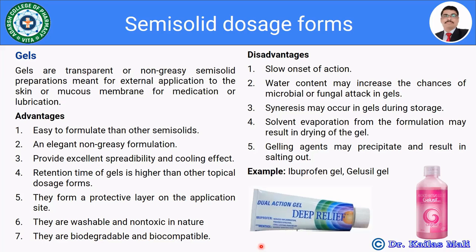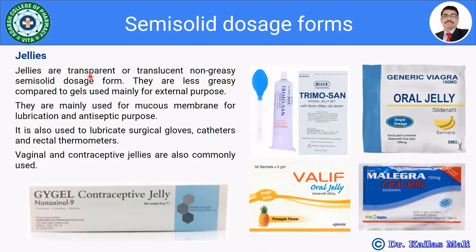Moving towards jellies: jellies are transparent or translucent, non-greasy semi-solid dosage forms. They are less greasy compared to gels and used mainly for external purposes, though some are also used internally. They are mainly used on mucous membranes for lubrication and antiseptic purposes, and to lubricate surgical gloves, catheters, and rectal thermometers. Vaginal and contraceptive jellies are also commonly used. Examples include Glygel (contraceptive jelly), Trimosan, Valip (oral jelly), Generic Viagra oral jelly, and Malikra.